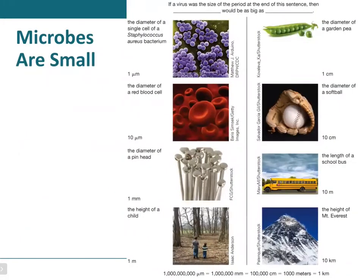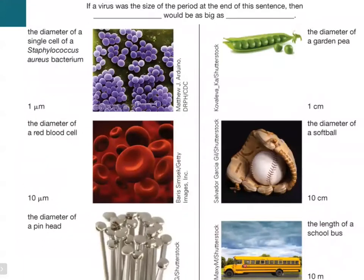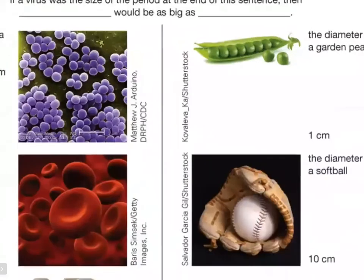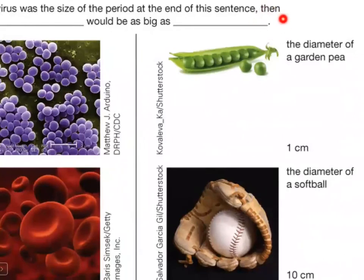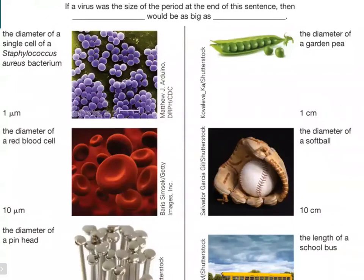So how small could a microbe be? In terms of perspective, let's look at these analogies. One of the smallest microbes — because even in the case of viruses there are large viruses and smaller viruses. So if a typical virus was the size of a period at the end of a sentence, the diameter of a single cell of your Staphylococcus aureus shown here would be the size of a garden pea.